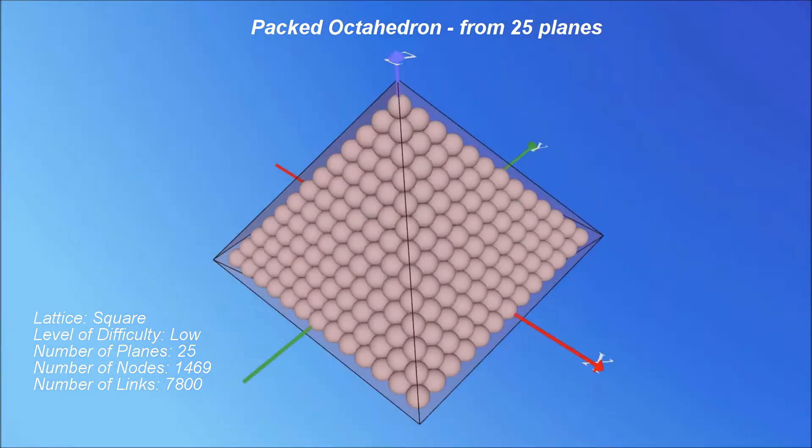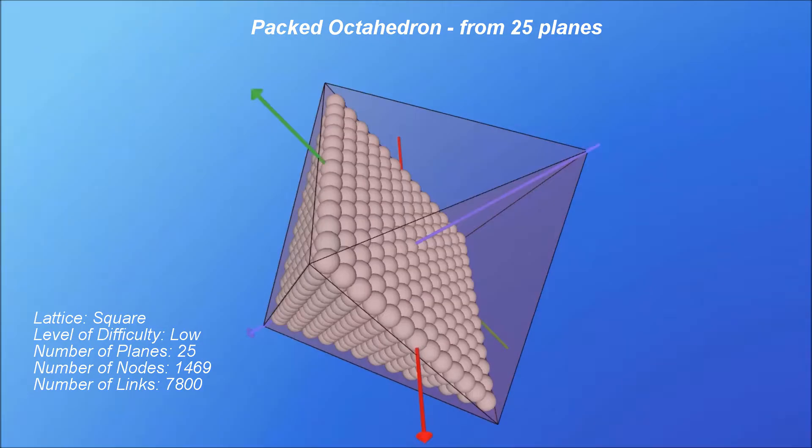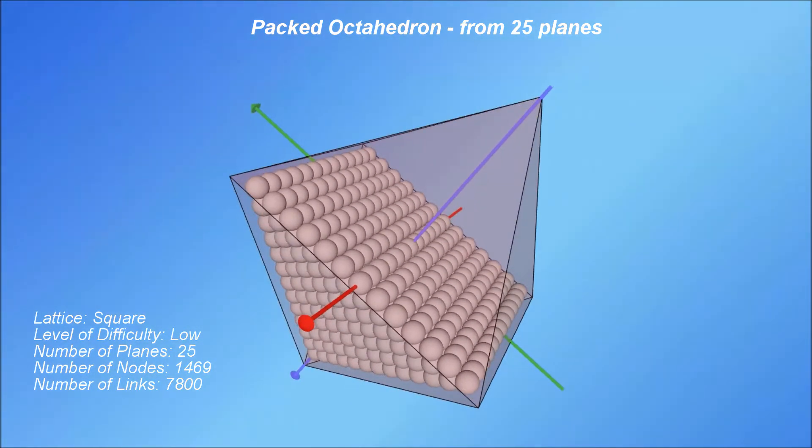Two such square pyramids, having the same base and developing in two opposite directions, generate the second platonic solid, the octahedron.